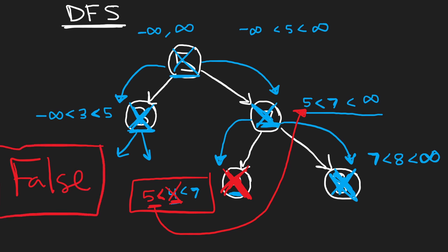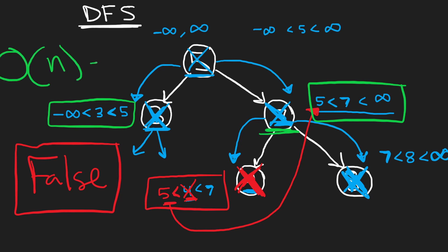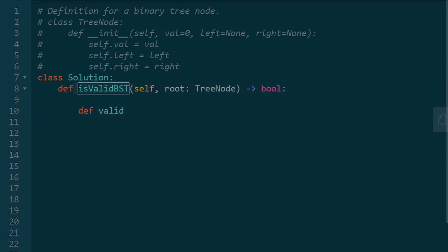With this algorithm, for each node we're only making two comparisons, so the time complexity is O(2N), which is just O(N) — linear time. Now it's time to write the algorithm. The best way to do this is recursively, so I'm going to write a helper function nested inside our original function.